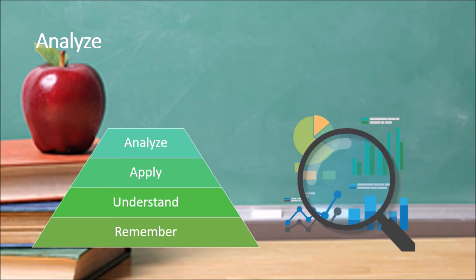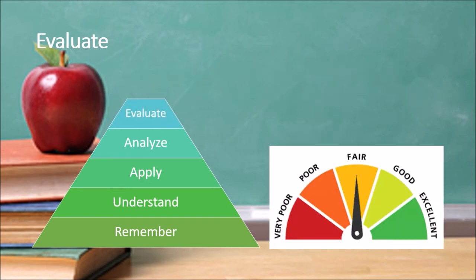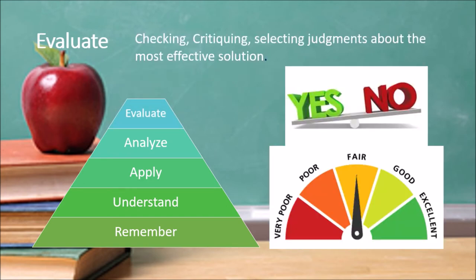The next level is 'analyze.' After applying our knowledge and getting results, we must be able to analyze those results through differentiating, organizing, attributing, and recognizing logical classes and reasoning. We should be able to interpret results, which may include pictorial representations like pie charts or graphs.